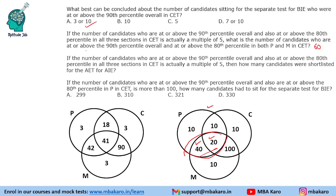Question 3: same condition (central value is a multiple of five, so A=10 case again). How many candidates were shortlisted for the AET for AIE? At least two sections must be cleared, so we count all four qualifying region values: 60 plus 160 plus 10 equals 117 students shortlisted for AET.